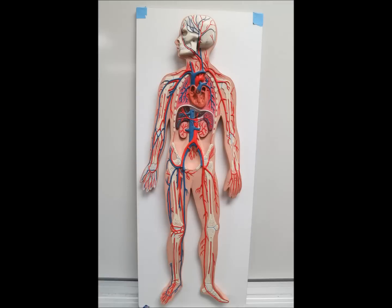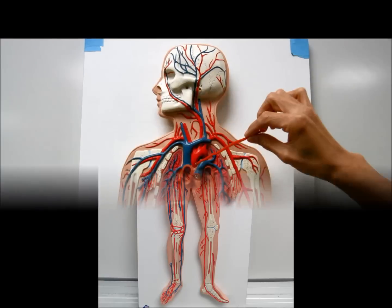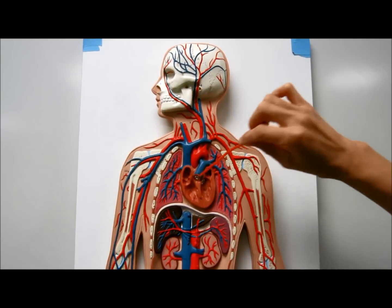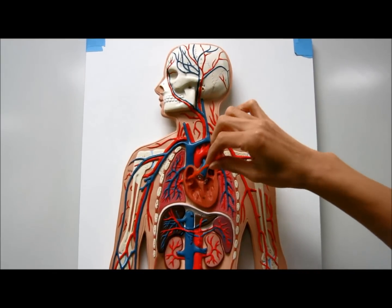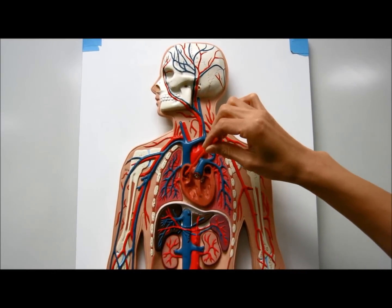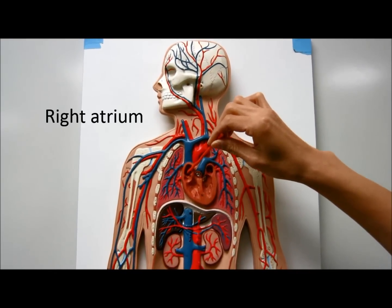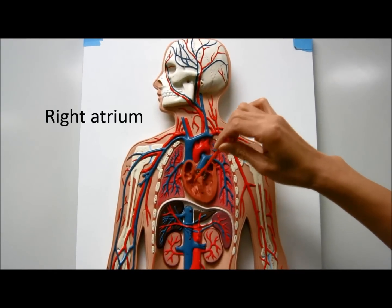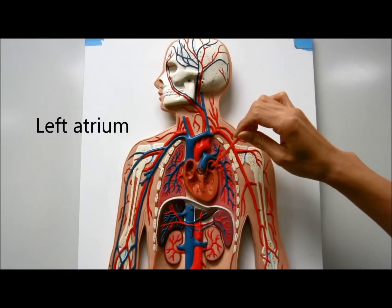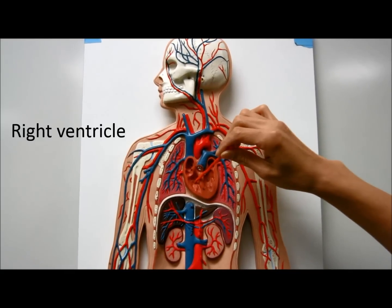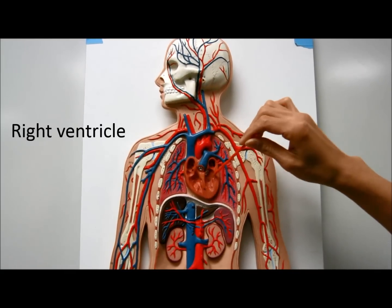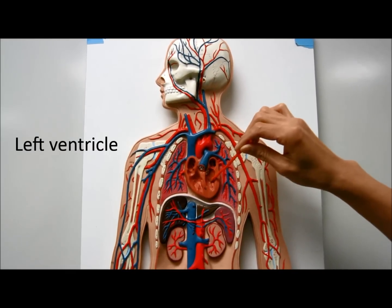This is the circulatory man. This is the heart. This is the right chamber of the heart. This is the right atrium. This is the left atrium, right ventricle, left ventricle.